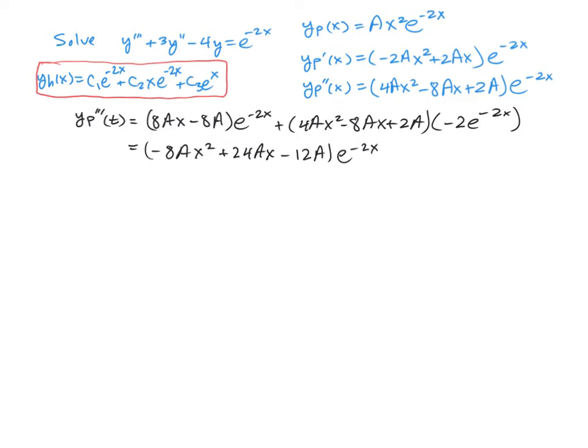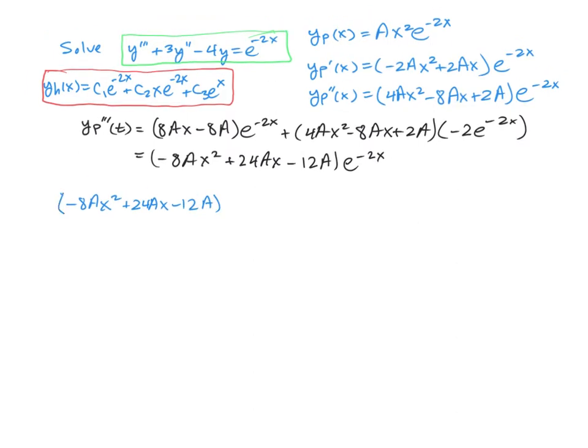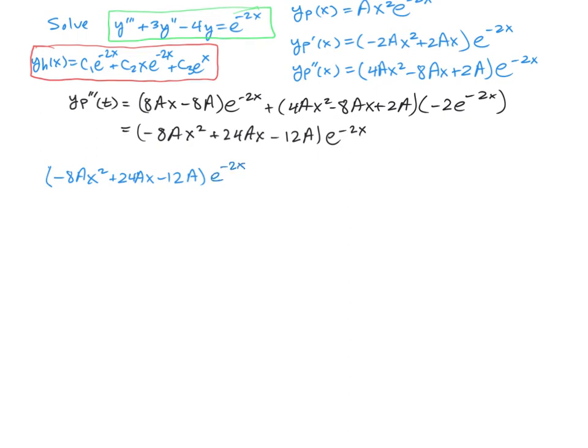Now we substitute all of this into the original inhomogeneous differential equation. We have negative 8ax² plus 24ax minus 12a, plus 3 times our second derivative, which was 4ax² minus 8ax plus 2a, times e^(-2x).